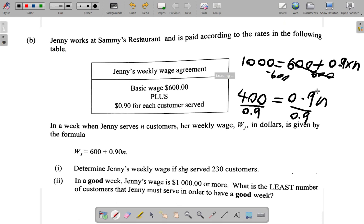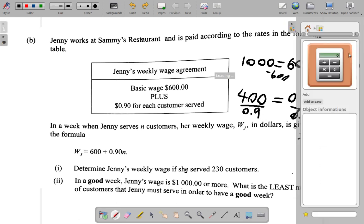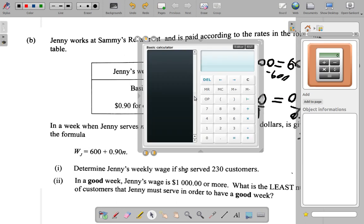0.9 cancels 0.9, so you have n alone on one side. 400 over 0.9, so you get 400 over 0.9 equals...